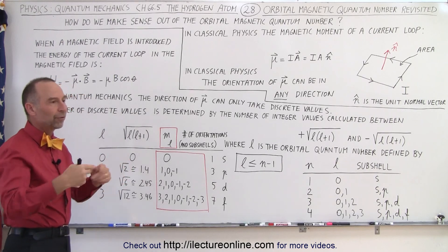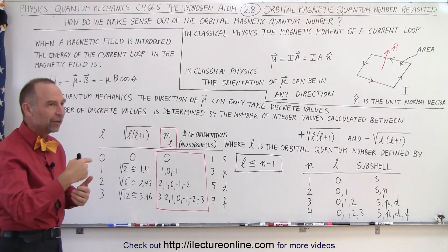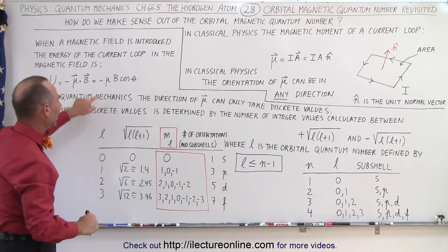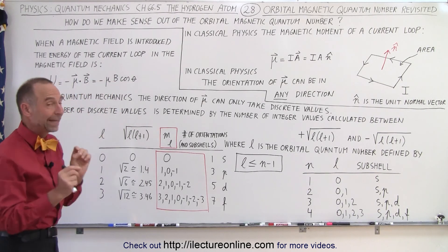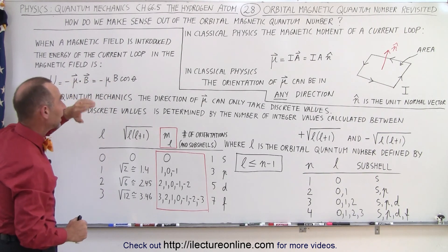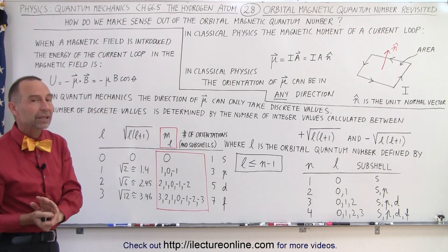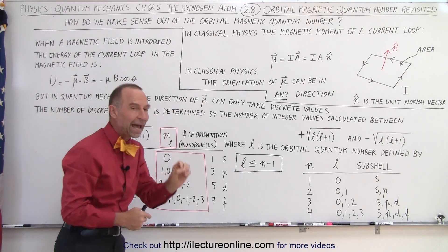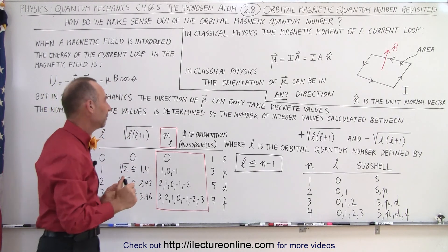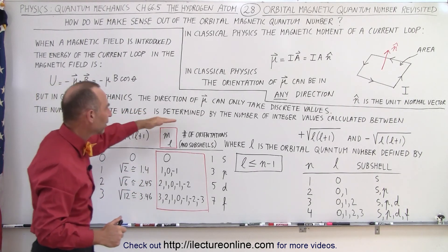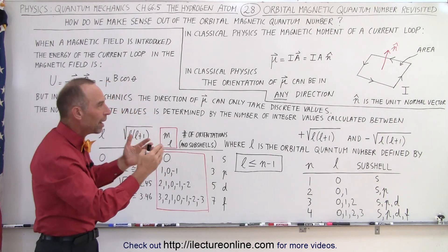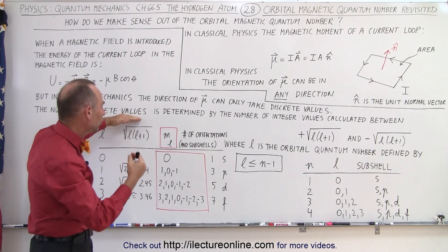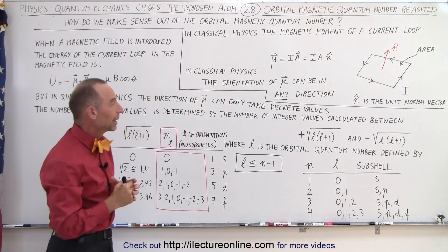The negative sign is just like with Lenz's law, where the current sets up a magnetic field in opposition to the magnetic field that causes the energy to exist in the first place. But again, in classical physics, that orientation has no limitations. However, in quantum mechanics, the direction of that magnetic moment can only have discrete values — and that's where the big difference comes in. The number of discrete values can then be determined based upon what the environment is like. We want to know what are all the various discrete values that the magnetic moment can take in quantum mechanics.